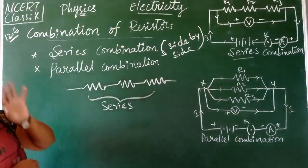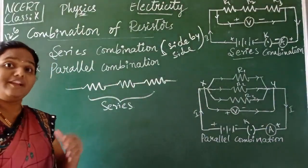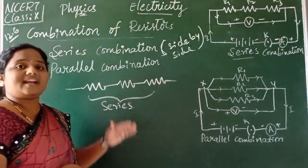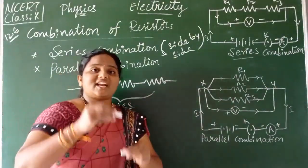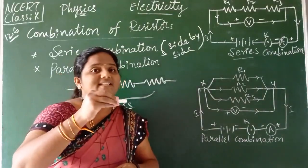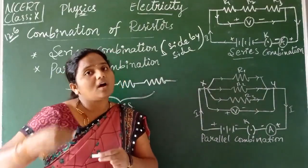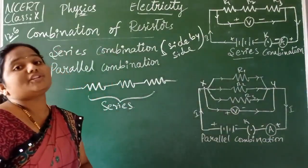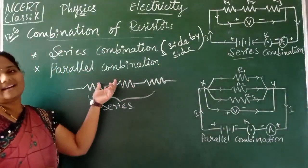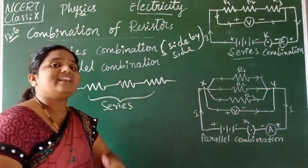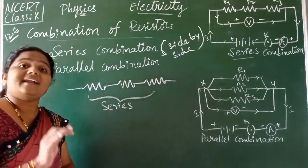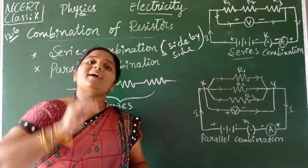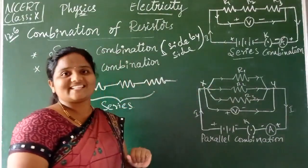Now, what is meant by parallel combination? If two or more resistors are connected down by down in the form of a ladder — one resistor up, the second one down, and the next still further down — such a pattern and combination is called parallel combination. Parallel combination has a ladder-like structure, where resistors go down by down, just like the steps of a ladder.